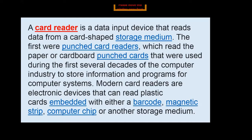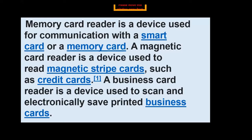An SD card is a small chip-like structure, and you place the card reader into the USB port of the computer, insert your SD card into the card reader, and it shows you the information on the computer screen. A memory card reader is used for communication with a smart card or memory card. A magnetic card reader reads magnetic strip cards such as credit cards. A business card reader scans and electronically saves printed business cards.